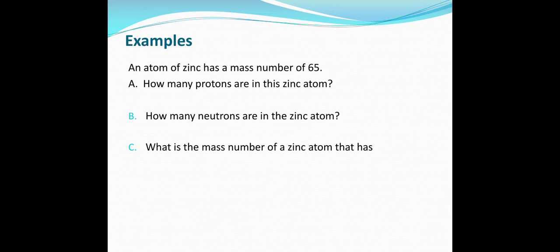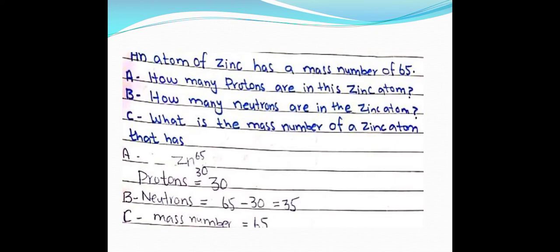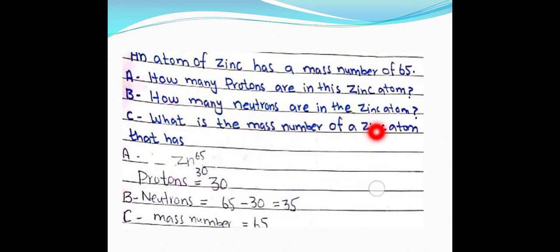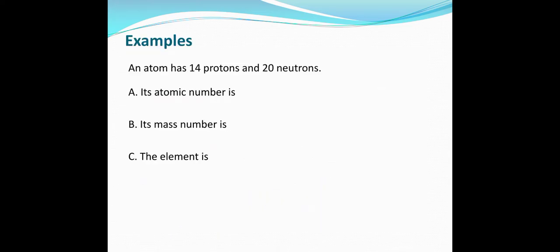For zinc with mass number 65: the atomic number of zinc is 30, so there are 30 protons and 30 electrons. Neutrons = 65 − 30 = 35 neutrons. For an atom with 14 protons and 20 neutrons: the atomic number is 14, and the mass number is 14 + 20 = 34.